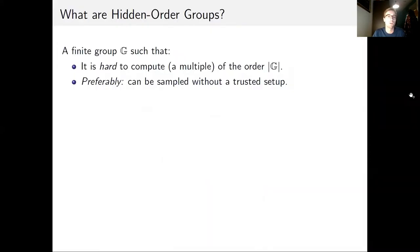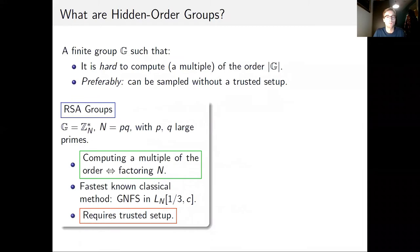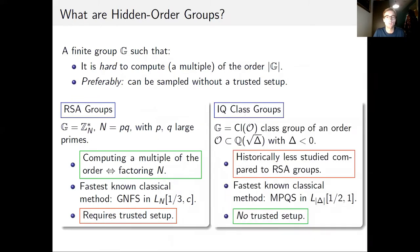A hidden order group is a finite group G such that it is hard to compute a multiple of the order of the group, and preferably we can sample these groups without the need for a trusted setup. The most well-known examples are RSA groups and imaginary quadratic class groups. In an RSA group, computing a multiple of the order is equivalent to factoring the modulus N, which is believed to be hard — the fastest known classical method is the general number field sieve.